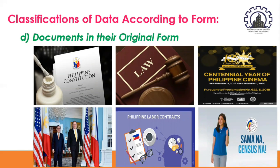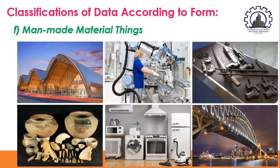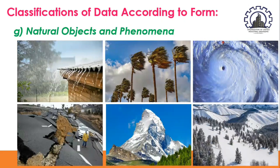Another that can be considered as primary source or primary data are living organisms, such as animals, foals, and lower forms of living organisms. We can also consider man-made material things as primary data, such as buildings, machines, weapons, artifacts, appliances, roads, bridges, dams, radio, television, electricity, etc. And finally, we also have natural objects and phenomena, which are also considered as primary data.